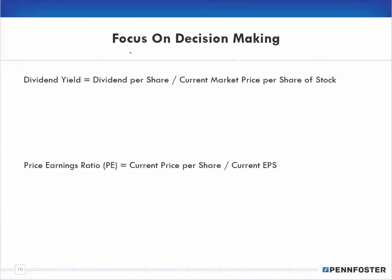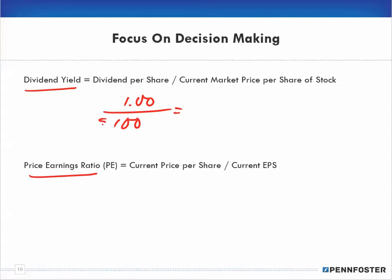The two ratios for this chapter are dividend yield and the price-to-earnings (PE) ratio. The dividend yield is dividends per share divided by the current market price per share of stock. So if a company had a dividend per share of $1 and the current market price is $100, then $1 divided by $100 gives a dividend yield of 0.01, which equals 1%.